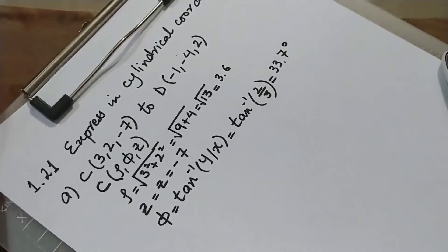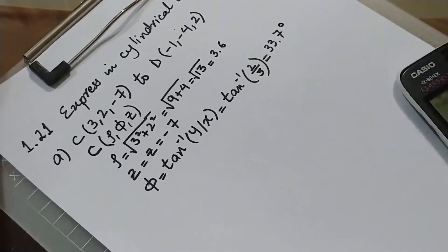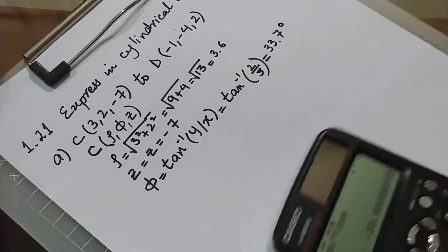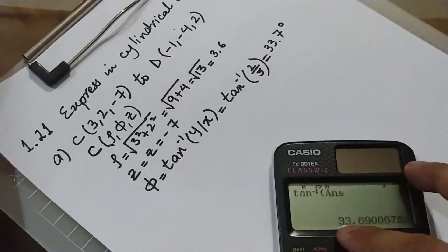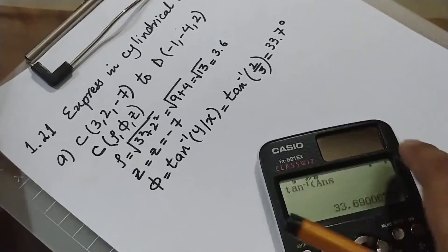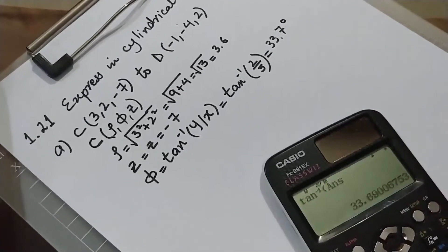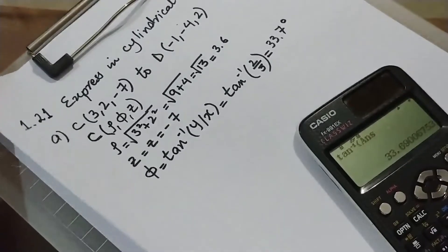This value of 33.7 degrees is exactly the value we used while solving the problem during the live session, and students have no trouble calculating phi in this case — part A.